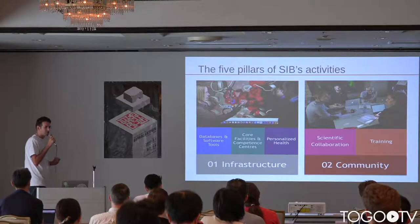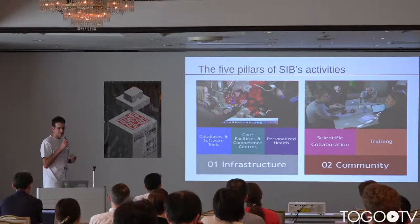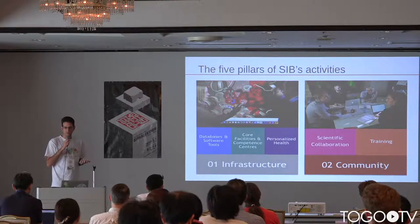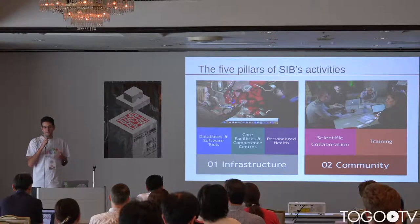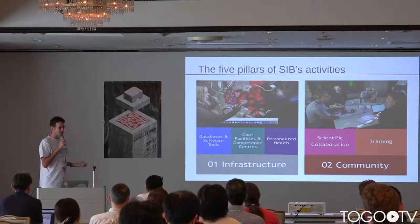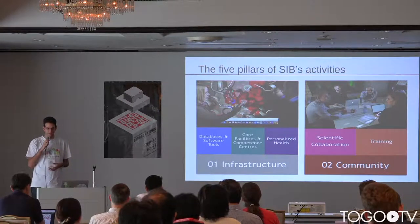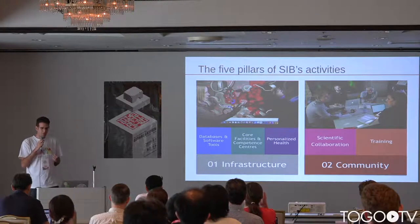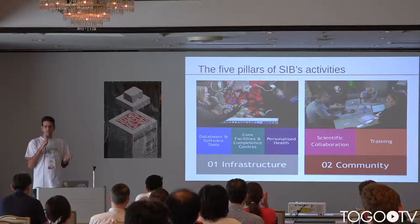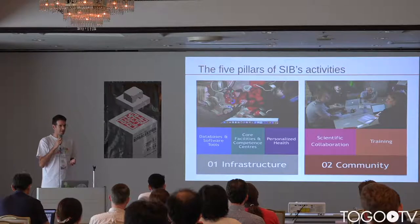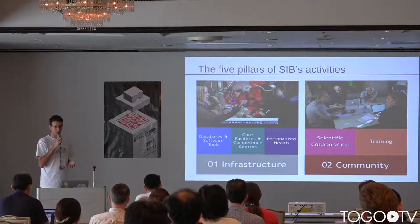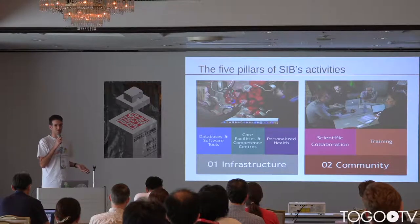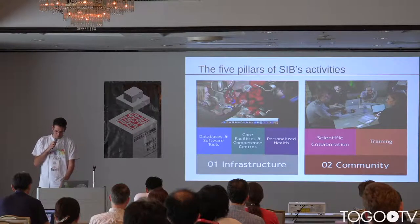The SIB is the Swiss Institute of Bioinformatics and has five pillars, but mostly these are separated into infrastructure and community, and these go hand-in-hand because we build the infrastructure for the community. And if there's no community then we don't have any infrastructure, because the funders will say, you have no community, why should we fund you?